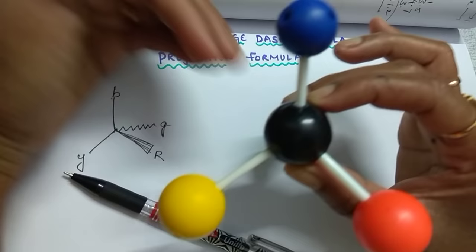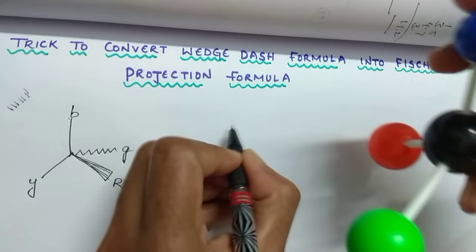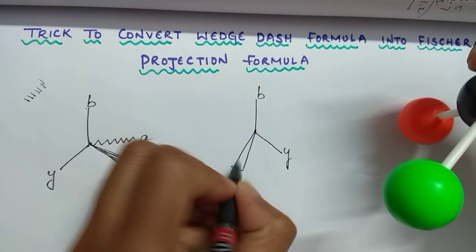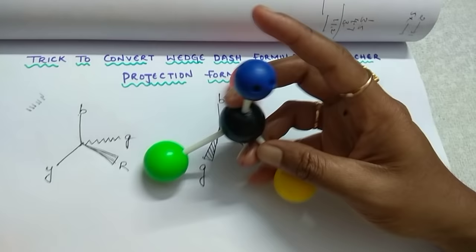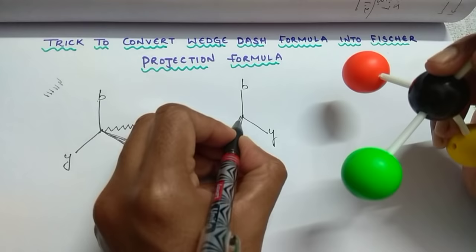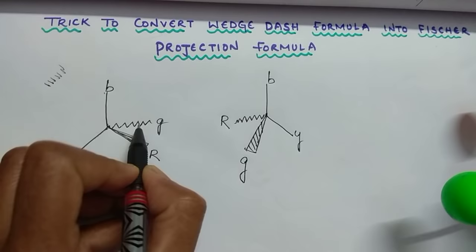If you see in a back direction — see my hand direction, this back direction — then how it looks is: this blue and this yellow are on the plane. This is blue and yellow on the plane, and this green is towards the viewer. So you have to represent with the solid wedge line. This green is towards the viewer and this red is away from the viewer. These 2 are on the plane; this is towards the viewer, this is away from the viewer. Away from the viewer, you have to write with the dash line like this. This is called a wedge-dash formula.